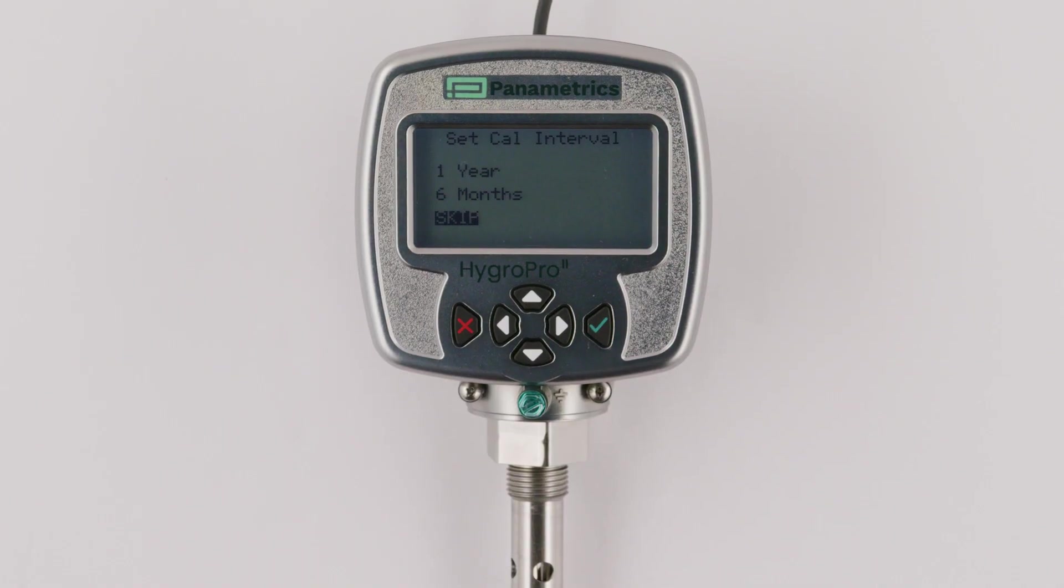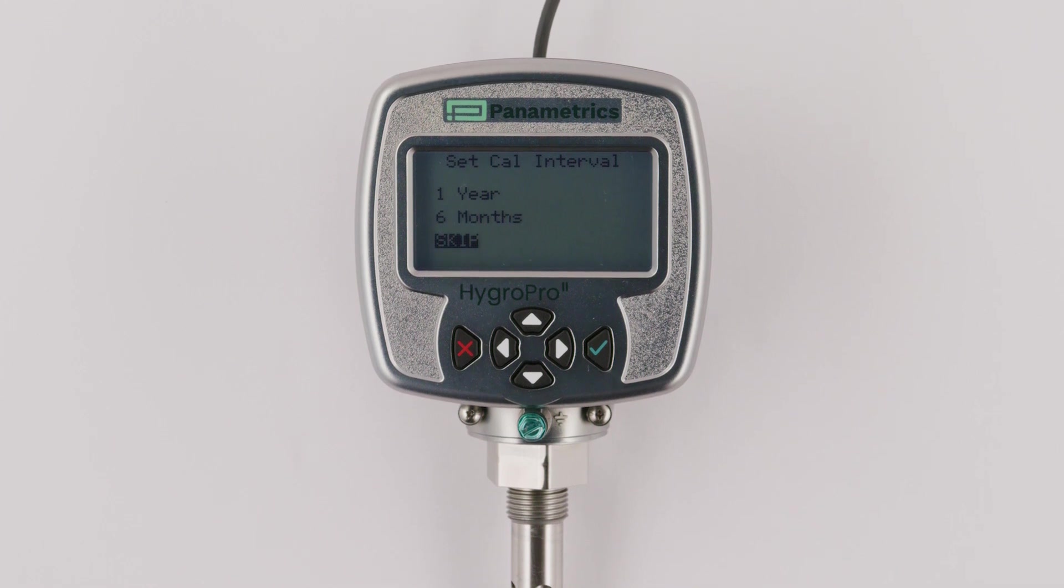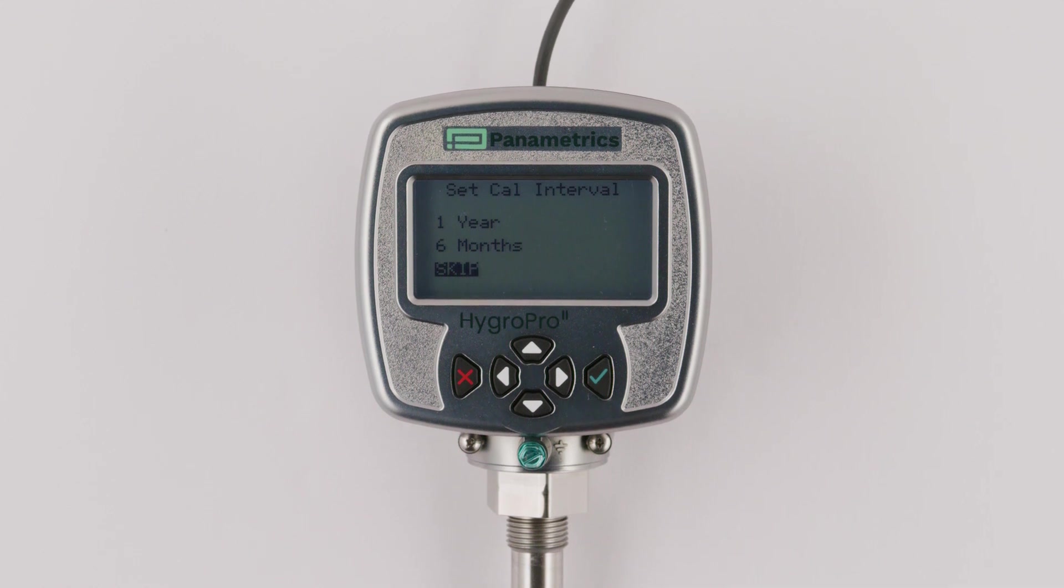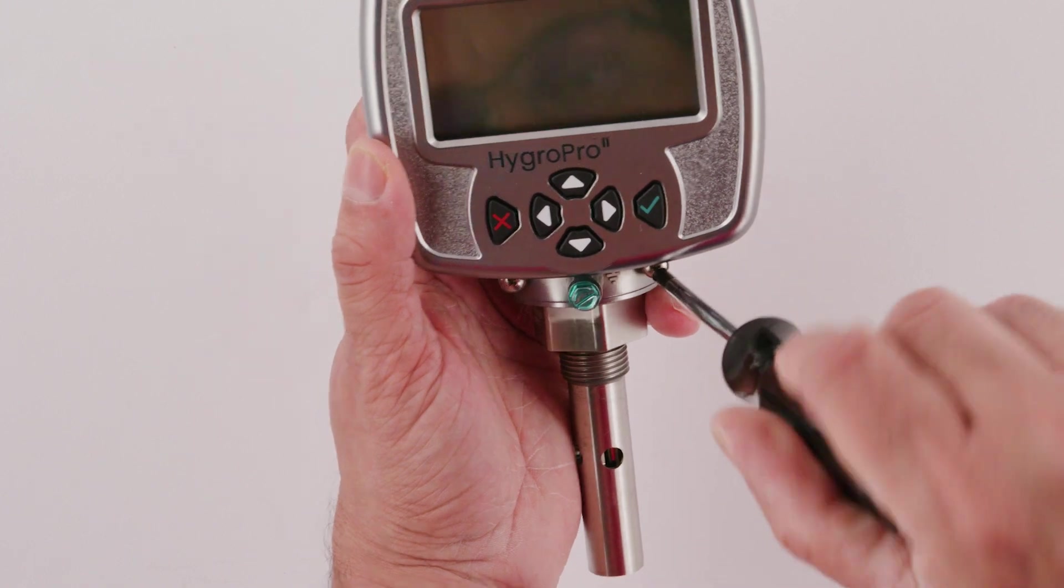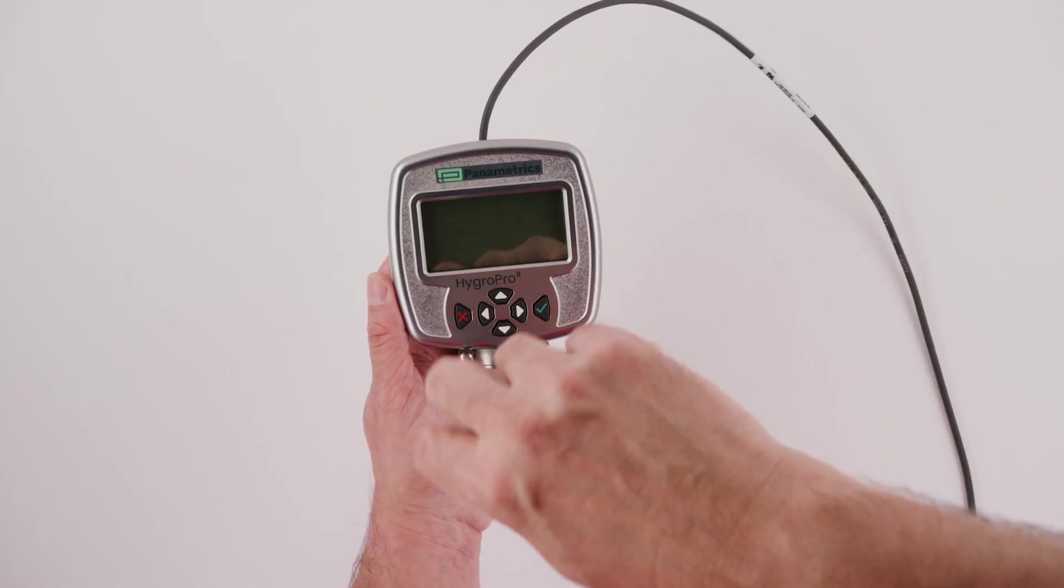The HygroPro 2 offers end users the convenience of automated calibration reminders for the moisture probe by allowing them to choose a suitable calibration interval upon startup. The moisture probe is easy to remove from the dismounted transmitter by loosening the two shoulder screws and disconnecting the internal M8 connector cable.